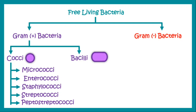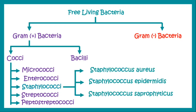Free-living bacteria, based on their properties of gram-staining, can be divided into gram-positive bacteria and gram-negative bacteria. If you don't know what gram-staining is, you can check out the video on our channel; the link will be in the description box below. Gram-positive bacteria can be either cocci or round-shaped bacteria, or they can be bacilli or rod-shaped bacteria. Cocci can again be micro-cocci, enterococci, staphylococci, streptococci, or pepto-streptococci. Today's video is all about staphylococci.